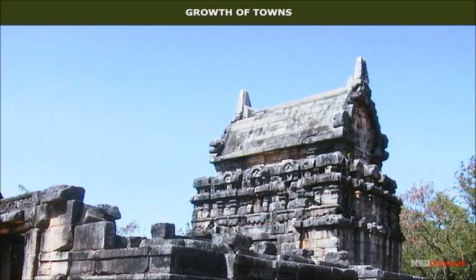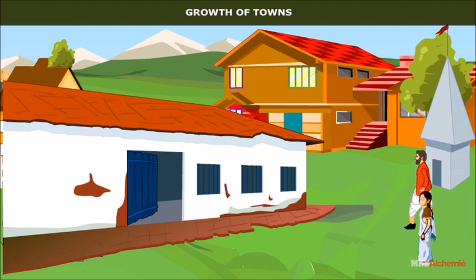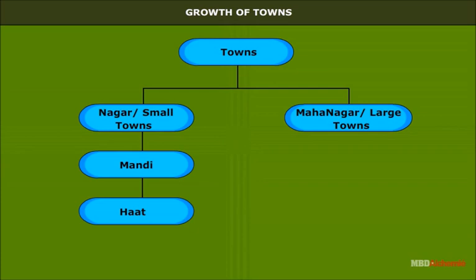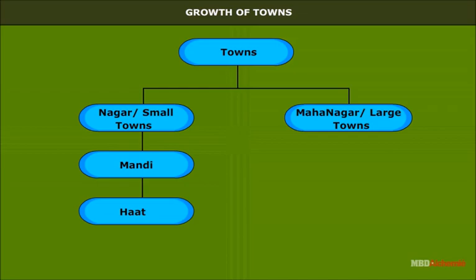Many purely administrative centers, e.g. court towns, and educational centers, e.g. Nalanda, as well as pilgrimage destinations and temple towns, also developed in different parts of the land. Besides these, in the medieval period, there were many local towns such as Mandi and Haat towns which served as focal points for rural marketing activities. Nagara was a common term for a town, while the term Mahanagara applied to a city. As Nagar and Mahanagar, these terms are still in vogue.